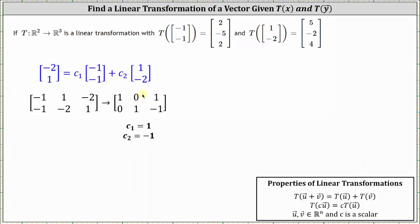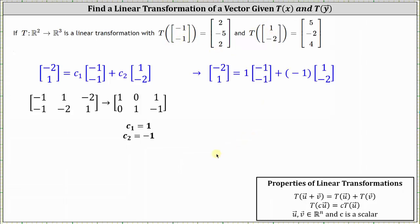The next step is to write the augmented matrix in reduced row echelon form, which I've already done. Notice how this indicates that C₁ equals 1 and C₂ equals -1. So now we can write the vector (-2, 1) as a linear combination: it equals 1 times the vector (-1, -1) plus (-1) times the vector (1, -2).